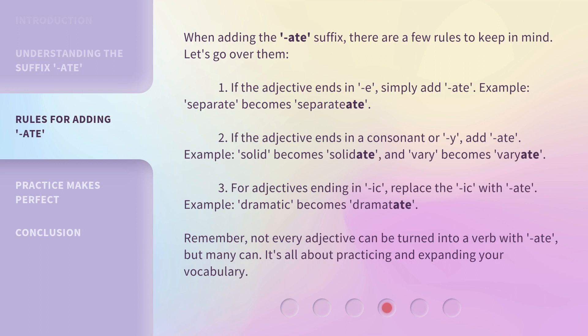When adding the -ate suffix, there are a few rules to keep in mind. Rule 1: If the adjective ends in E, simply add -ate. Example: 'Separate' becomes 'Separate.' Rule 2: If the adjective ends in a consonant or Y, add -ate. Example: 'Solid' becomes 'Solidate,' and 'Very' becomes 'Variate.'